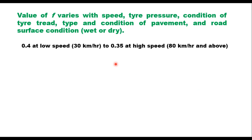The value of f varies with speed, tire pressure, condition of the tire tread, type and condition of the pavement, and road surface condition (wet or dry). IRC 73 suggests values of f ranging from 0.35 at high speed to 0.40 at low speed. You can take any value between 0.35 and 0.40 depending upon conditions at the site.